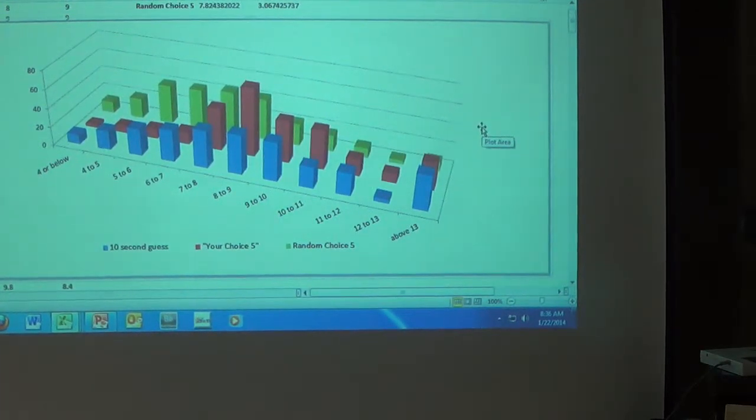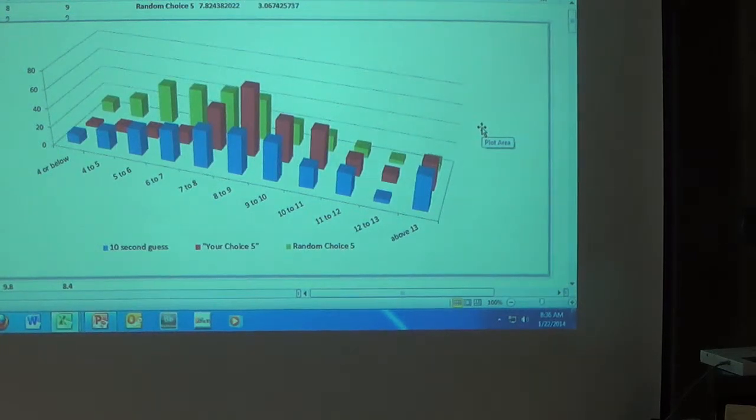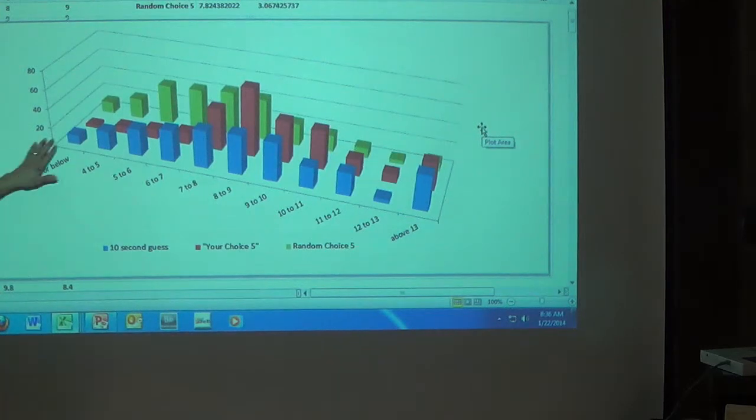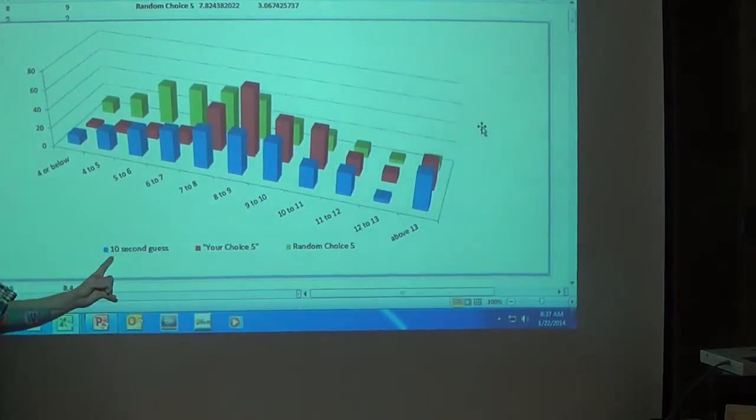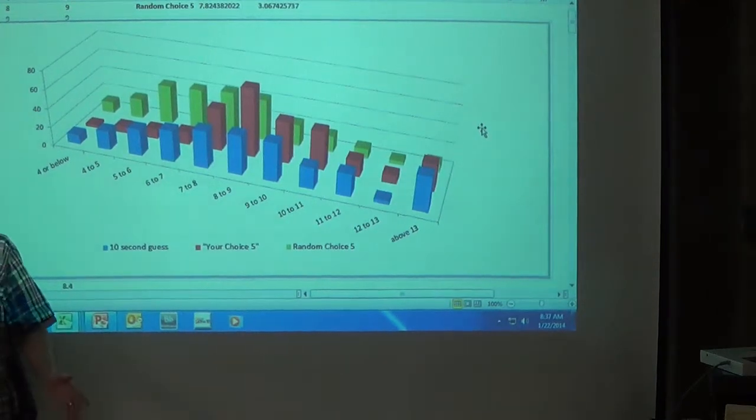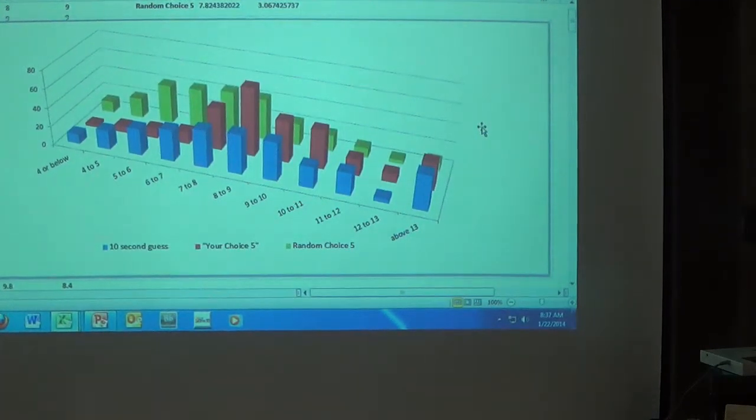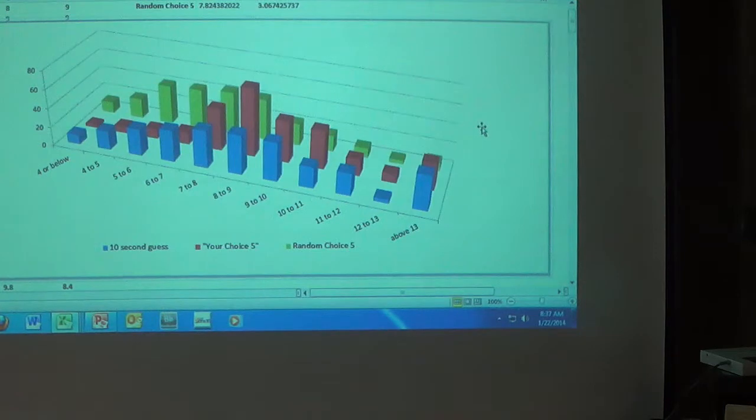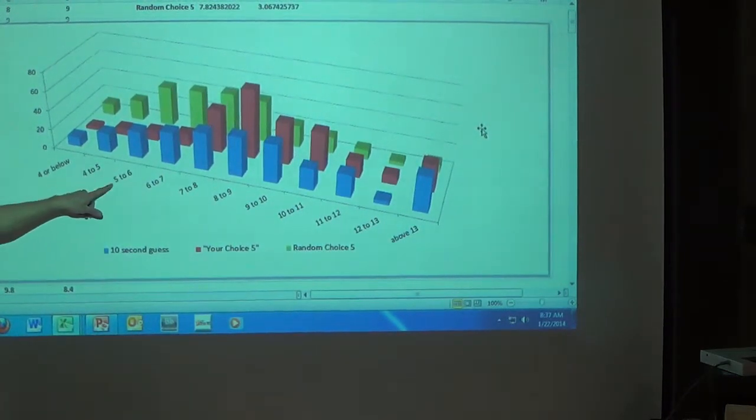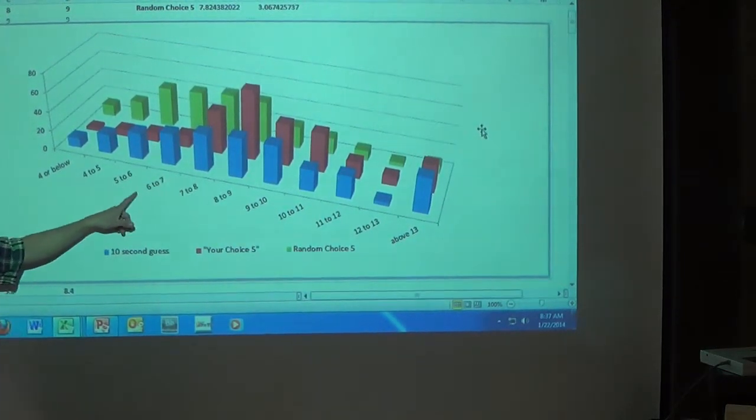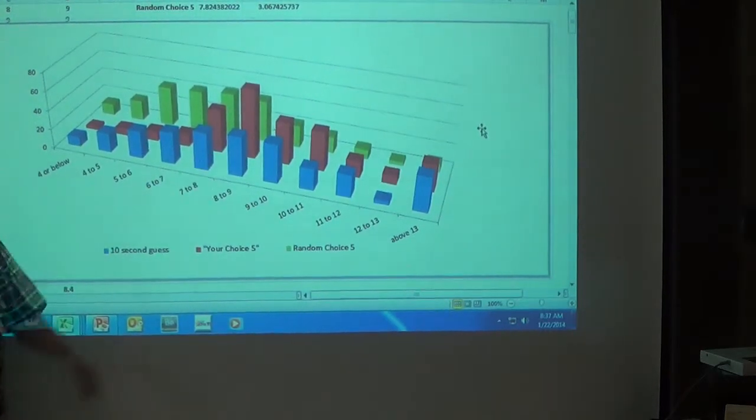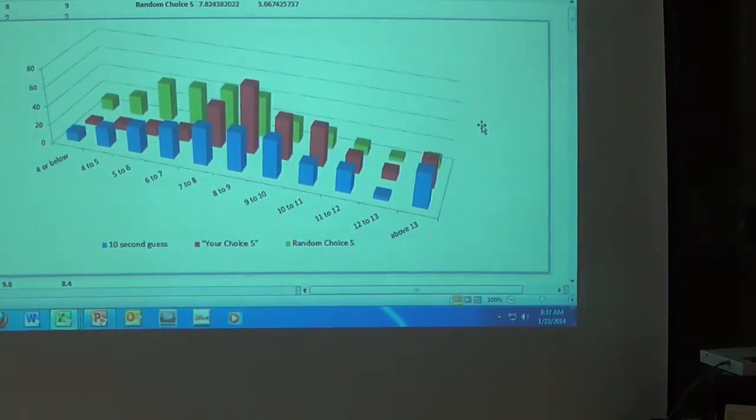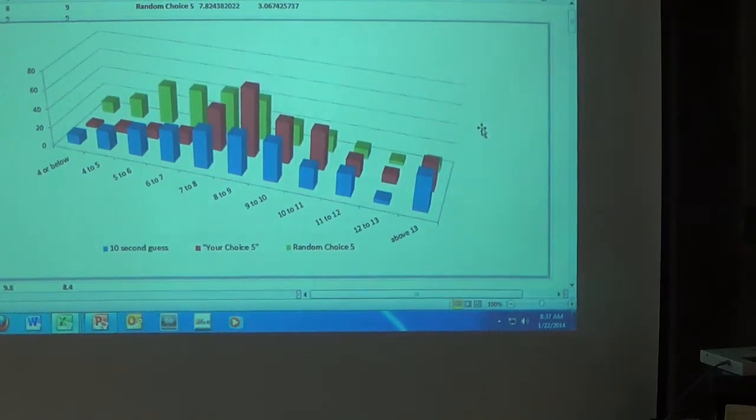So what I did was I plotted the results of this experiment just to kind of show you the importance of random sampling. So the blue histogram across the front here is what I called the 10-second guess. That's when the thing opened up and you had to guess what the area was. Chances are you got to the end of 10 seconds and you really didn't have much of an idea, so you kind of ballparked a shot out there. And this is the result, 4 or below, 4 to 5, 5 to 6, 6 to 7, 7 to 8, and they're bucking up against each other. And so that's that.